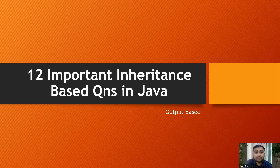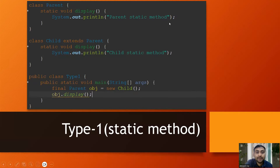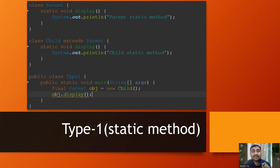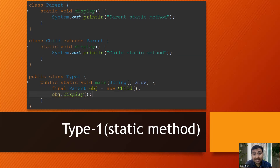The first variation is Type 1: static methods. There is a parent class and a child class extending the parent class — simple inheritance. The parent class has a static display method. The child class also has a display method. This is not overriding; it is actually method hiding, because static is present.